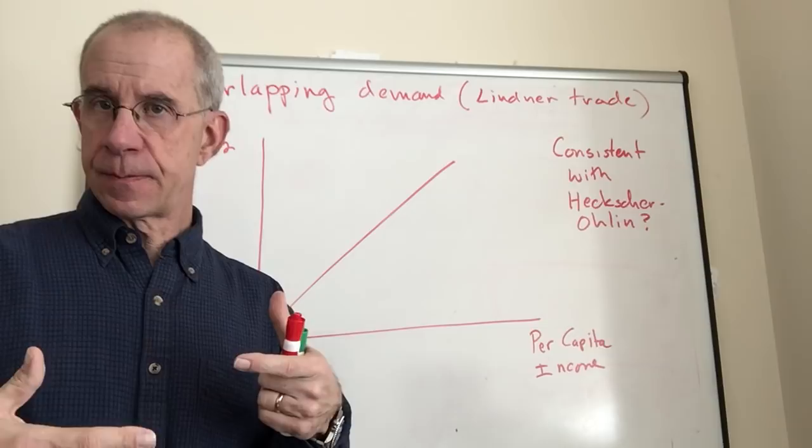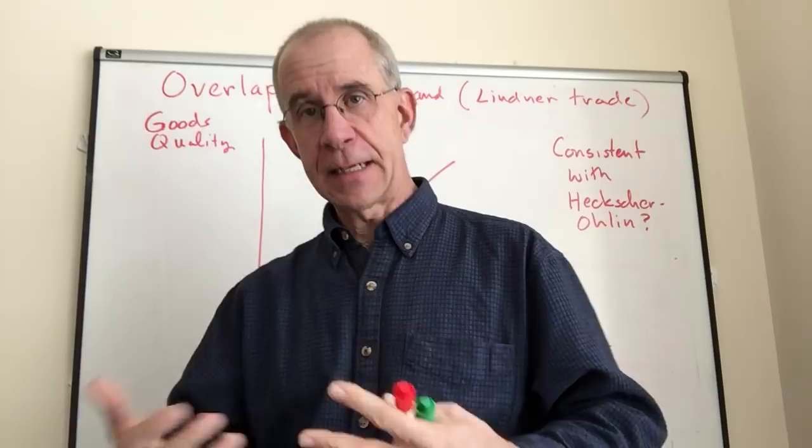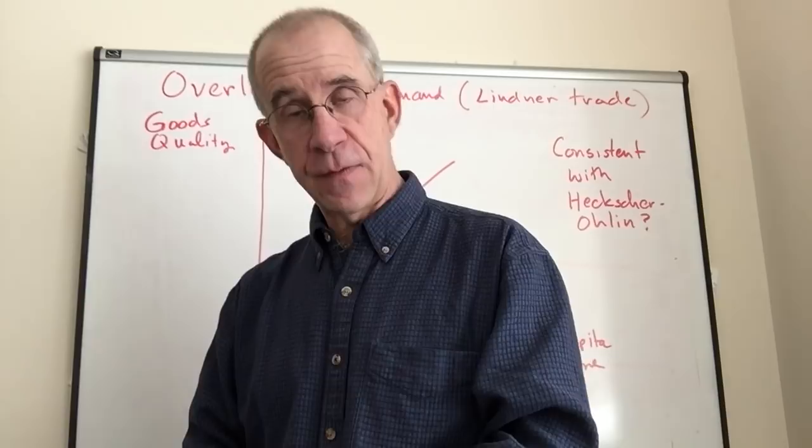The Heckscher-Ohlin and Ricardian models emphasize countries that are different from each other and why they might want to trade. In the Ricardian model, it's countries that have different technological capabilities. Heckscher-Ohlin is about factor endowments, but it emphasizes differences. So you would expect in that framework to have a lot of trade between developed and developing countries.